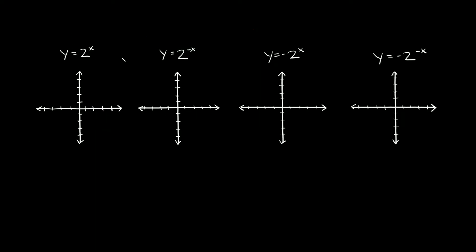Here are the four equations we're going to graph. We have y is equal to 2 to the x, y is equal to 2 to the negative x, y is equal to negative 2 to the x, and y is equal to negative 2 to the negative x. Looking at the first one, we have a positive x and a positive y, so we should expect it to slope upward. The easiest way to graph it is just making a little x-y table.